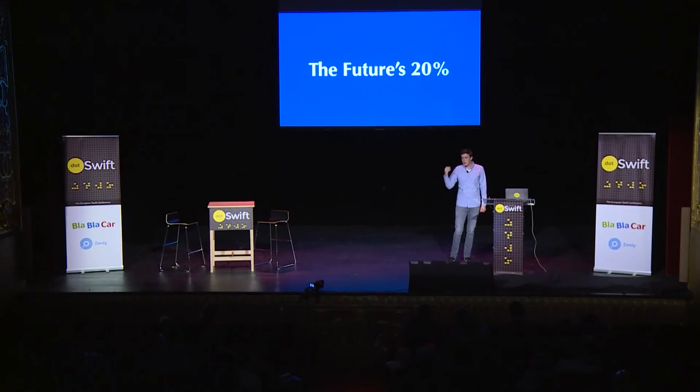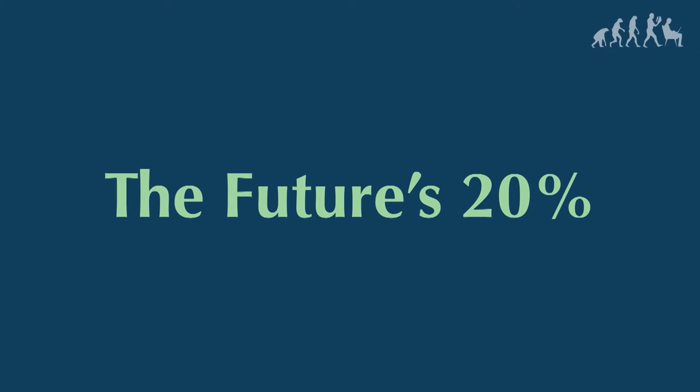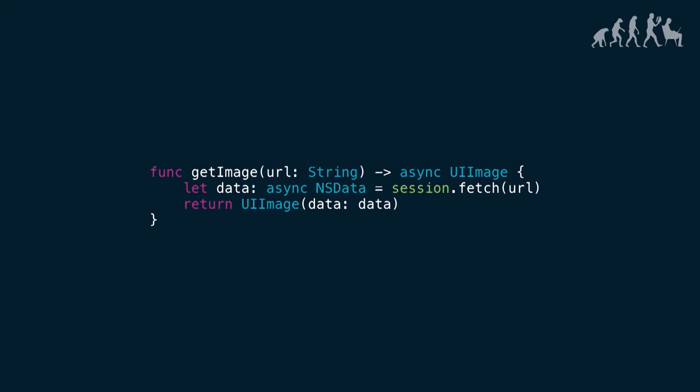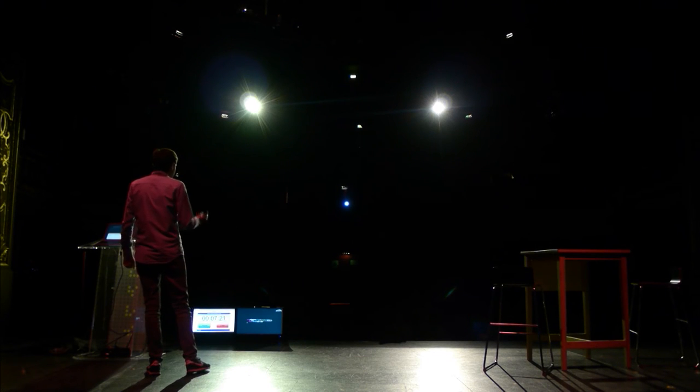So I'd like to think about what the last 20% for the future would be to make it really awesome to use. This is all Swift evolution mailing list material. So I'd say we need an async keyword in the language that we can use as a type modifier on, for example, a return type, indicating that the method is returning a future — an asynchronous type. We can implement this method with another asynchronous method, fetch on a session, which will return asynchronous data. And we pass that asynchronous NSData to the initializer of UIImage, and the compiler will automatically generate an asynchronous version of the UIImage initializer, which also returns an asynchronous UIImage.